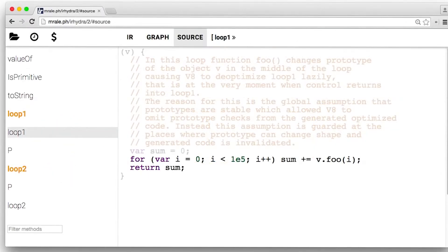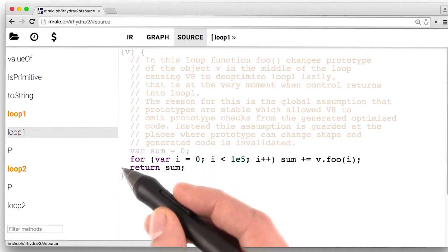For us as developers, what that means is there's no way to look at JavaScript and know exactly what code will run in the engine. Take a look at this JavaScript code here. It's a for loop, it's pretty simple.